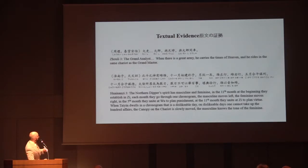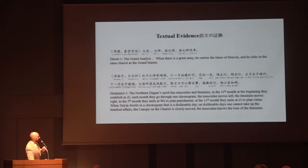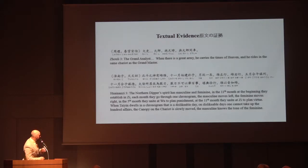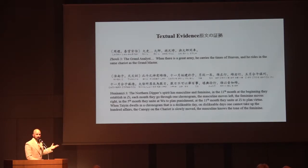From the Huainanzi: 'When the tai sway dwells in a chronogram that is a dislikable day, on a dislikable day is when one cannot take up a hundred affairs. The canopy and chariot' — another term for the Shurpan, canopy meaning round and chariot meaning square — 'is slowly moved. The masculine knows the tone of the feminine' — they work in unison.' This is talking about saying that if it points in certain directions, it's a dislikable day — don't do things. Same sort of thing we do with date selection.